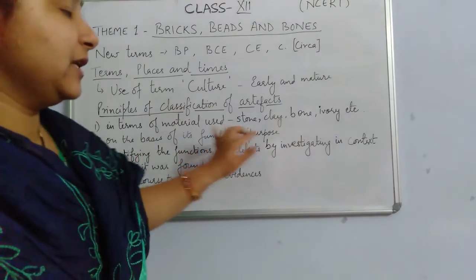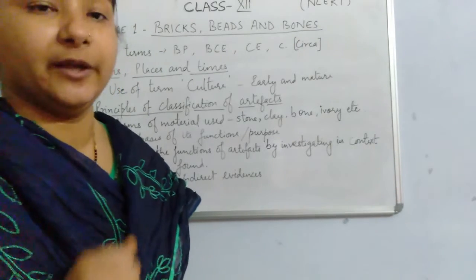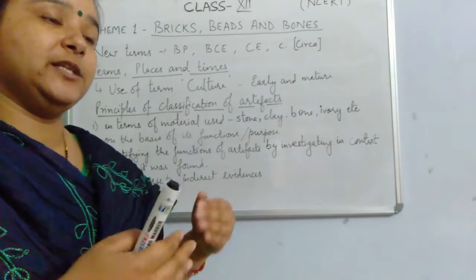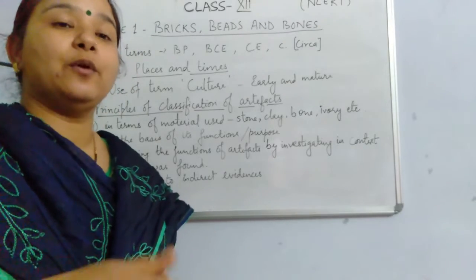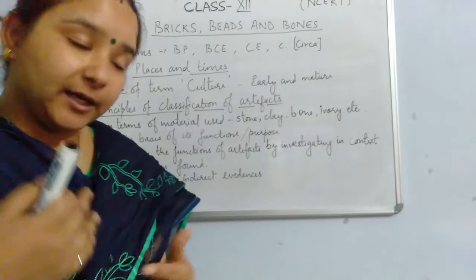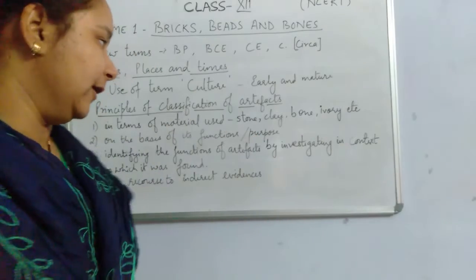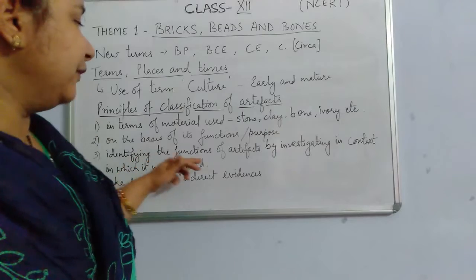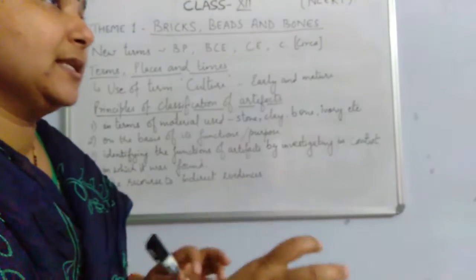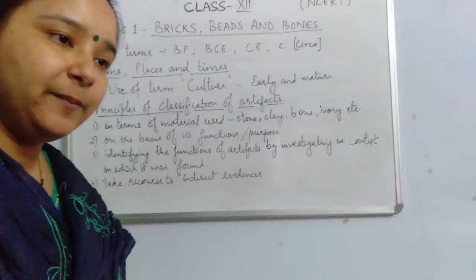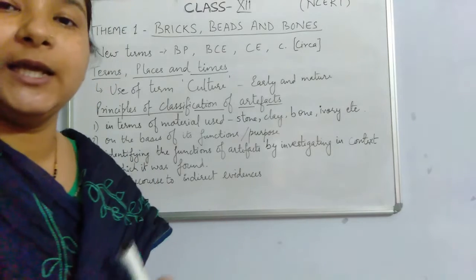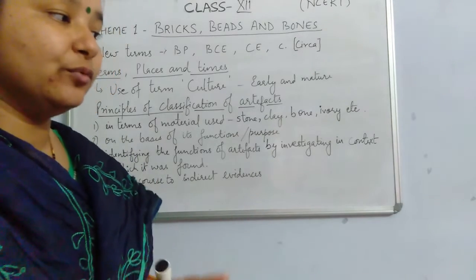The second principle is the function and purpose of the artifact — for what purpose these artifacts were made. Whether these artifacts were used in day-to-day life, or were specially meant for performing rites, rituals, or sacrifices. The third principle involves identifying the function of an artifact by investigating the context in which it was found — whether it was found in a house, a courtyard, a drain, or at a ritual site — to determine its likely purpose.